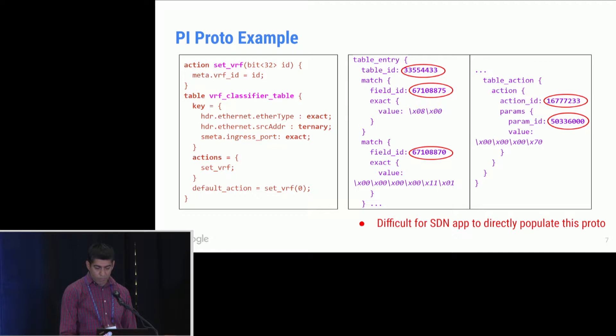The first thing to highlight here is that because we are using IDs that are generated by the compiler, SDN apps having to directly materialize these messages is going to be difficult. Second, the values themselves are encoded as bytes, a byte array, and what that means is that we lose a bit of type safety in doing so.